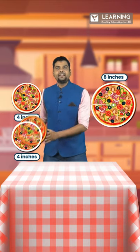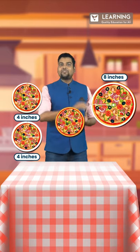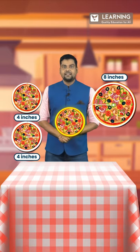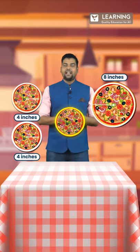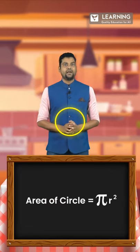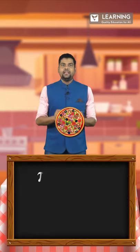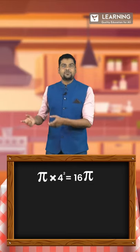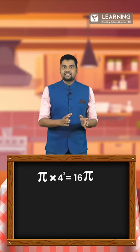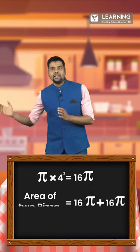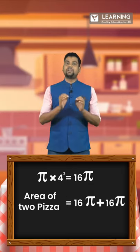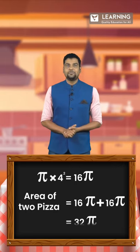If I take a pizza, it is in the shape of a circle, and we know that the area of a circle is pi r squared. So if I have a smaller pizza, the area of one pizza will be equal to pi into 4 squared, that is 16 pi. So 16 pi plus 16 pi is going to be 32 pi.